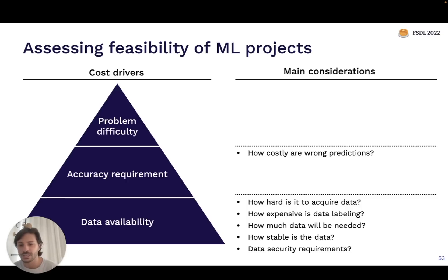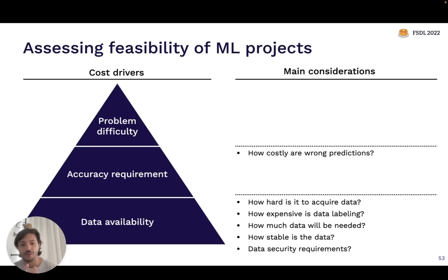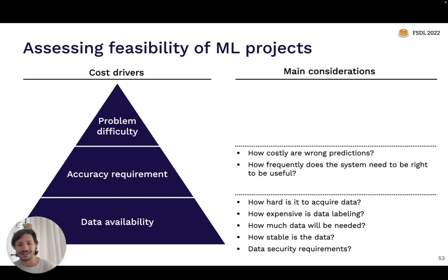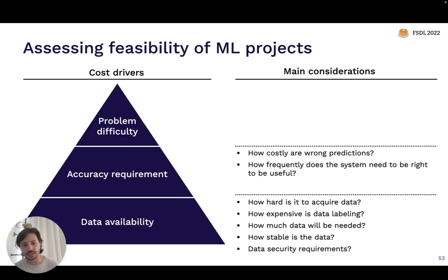Moving on to accuracy requirements. How expensive is it when you make a wrong prediction? On one extreme, a self-driving car: a wrong prediction is extremely expensive. On the other extreme, a recommender system: if a user sees a bad recommendation once, it's probably not that bad. You also need to ask how frequently the system actually needs to be right to be useful. Think of DALL-E 2: you can generate thousands of images and select the one you want — you don't need it right every single time to get value. On the other hand, if the system needs to be 100% reliable to be useful, it's going to be more expensive to build.